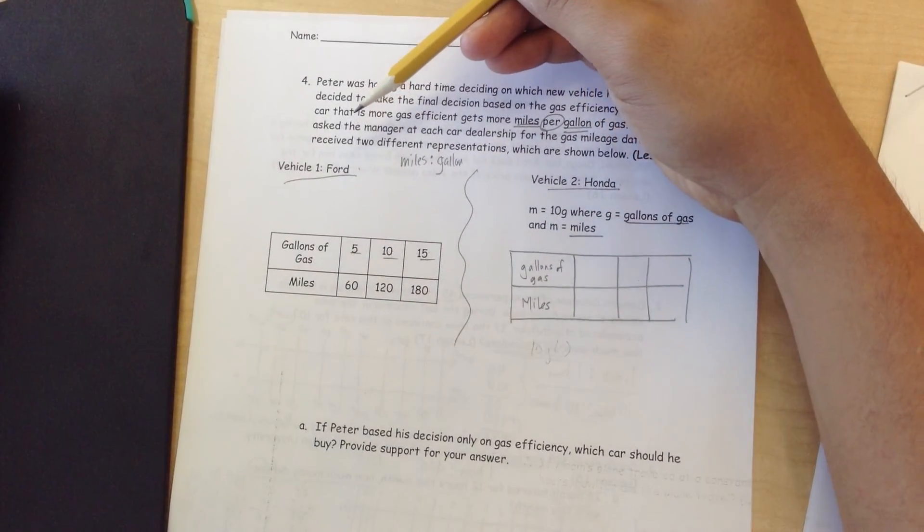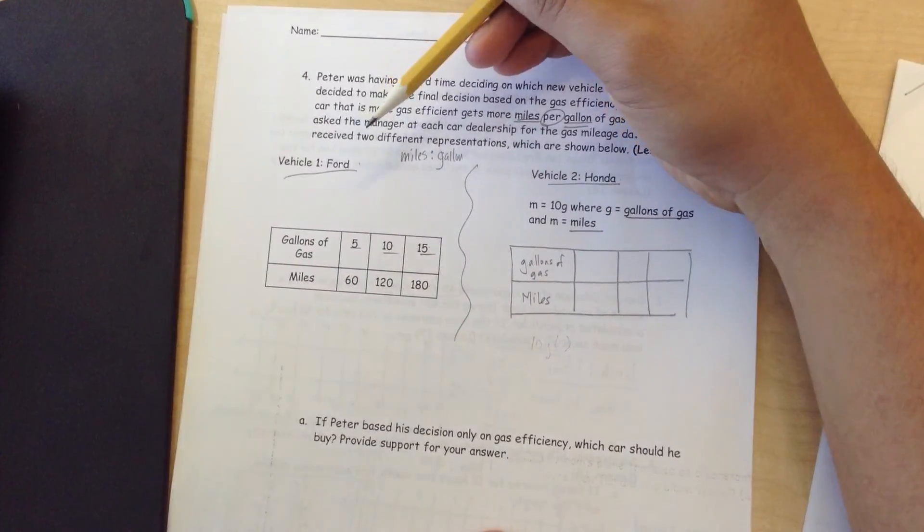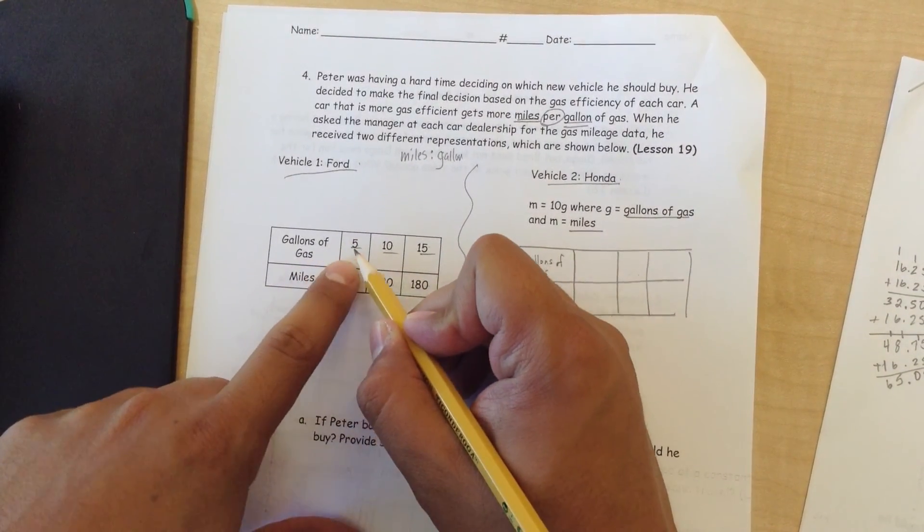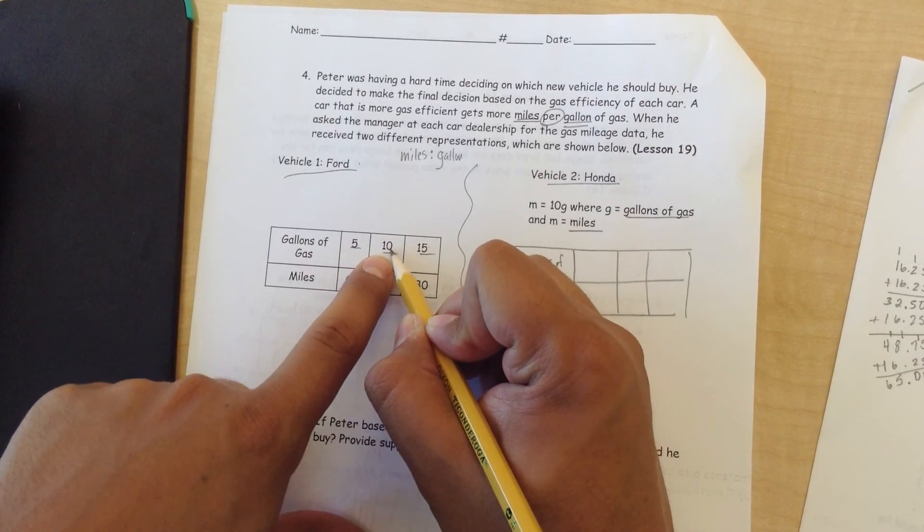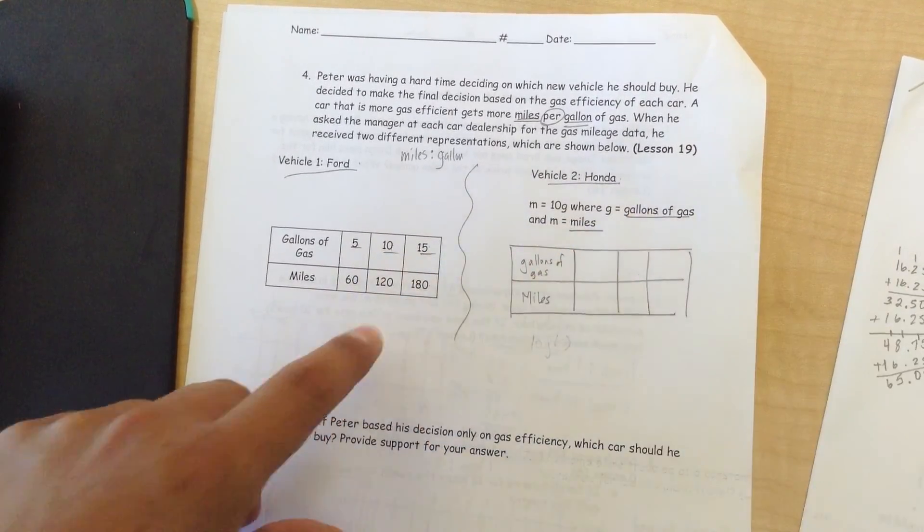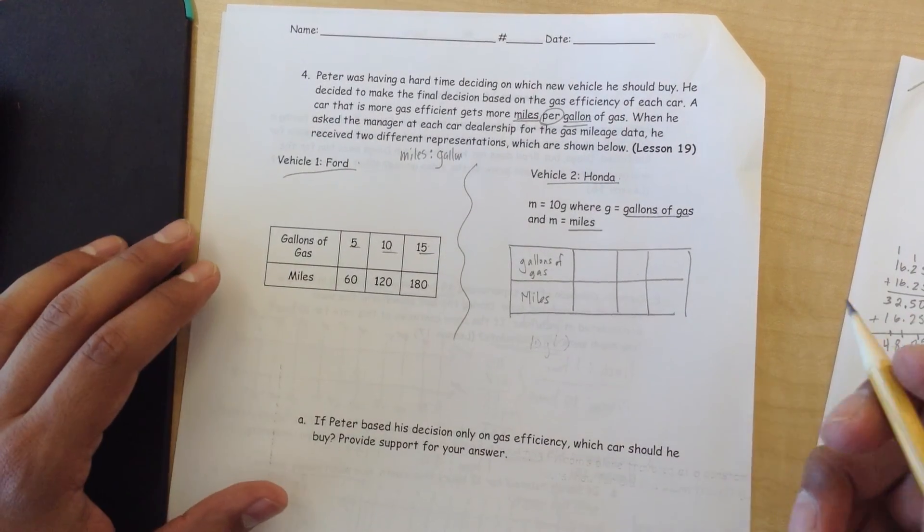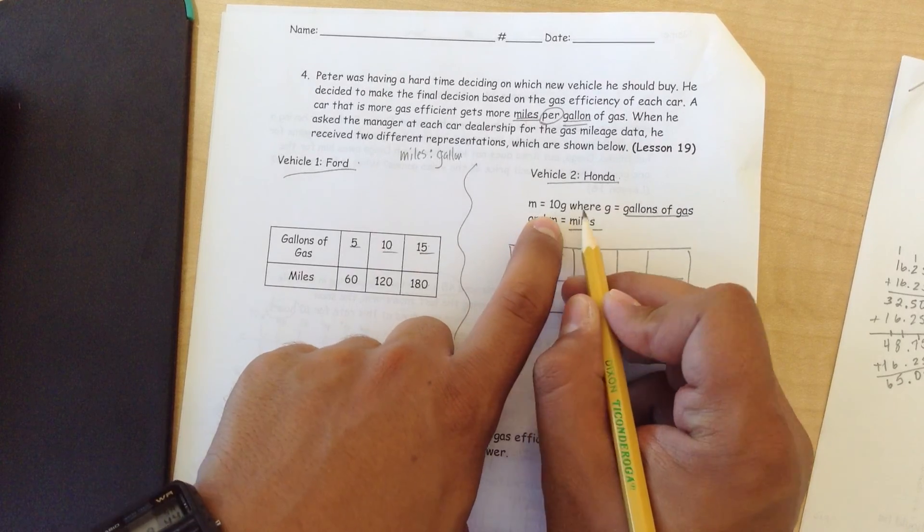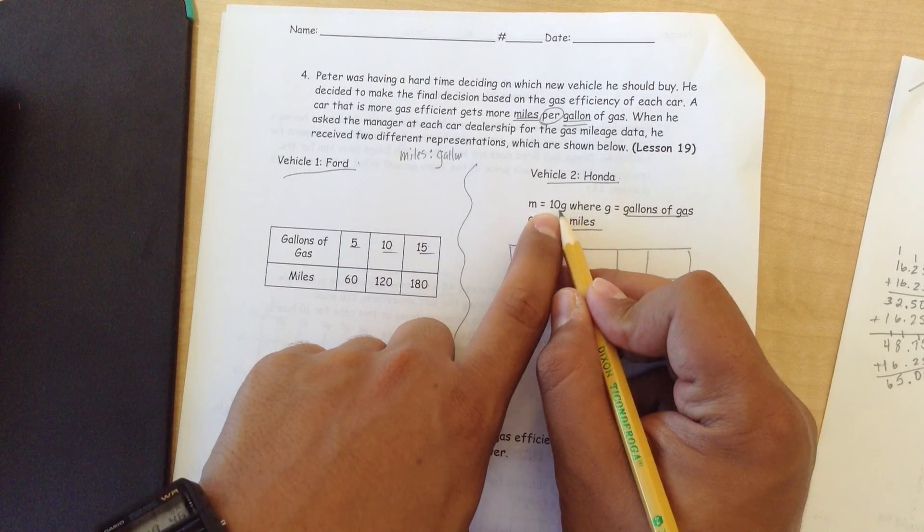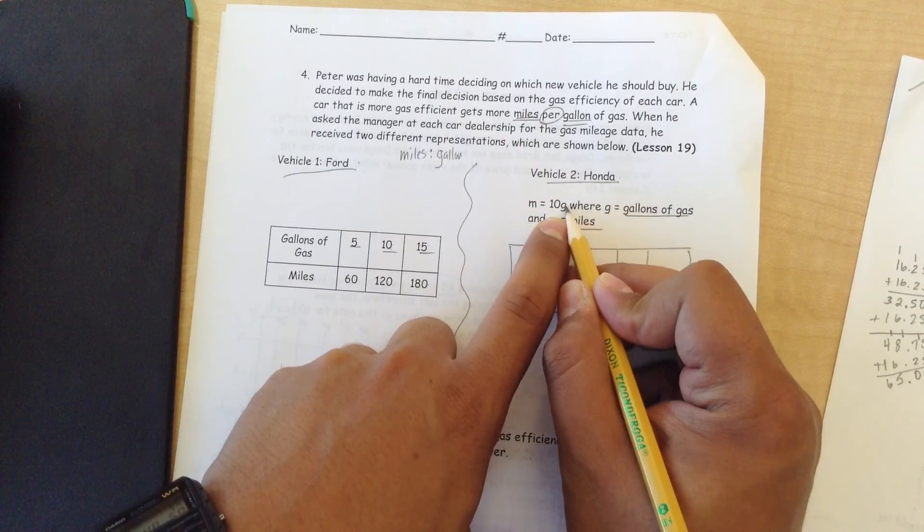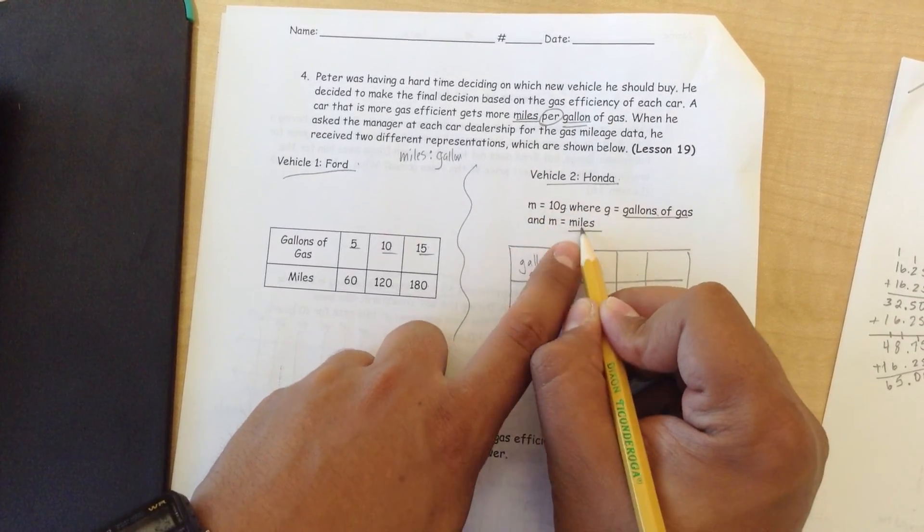Let's look at the two vehicles he's talking about. First, we're looking at the Ford. The Ford basically is telling you that for 5 gallons of gas you get 60 miles, for 10 gallons of gas you get 120, for 15 gallons of gas you get 180. Now, Honda, it's telling you the formula of how much gas it gets. Basically, miles equals 10g and g represents gallons of gas and m represents miles.